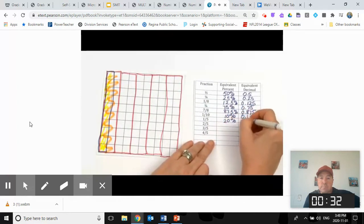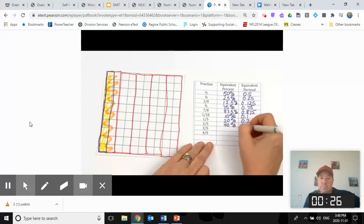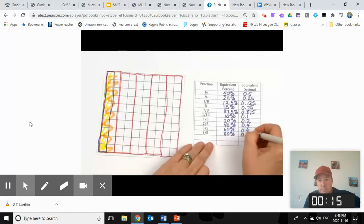Two-fifths will be, you're right, forty percent. Zero and four-tenths. Three-fifths will be sixty percent. Zero and six-tenths. And four-fifths will be eighty percent. Zero and eight-tenths.